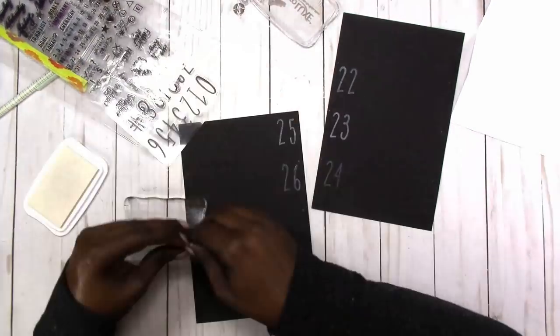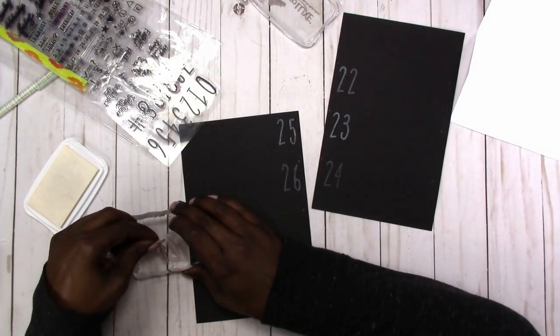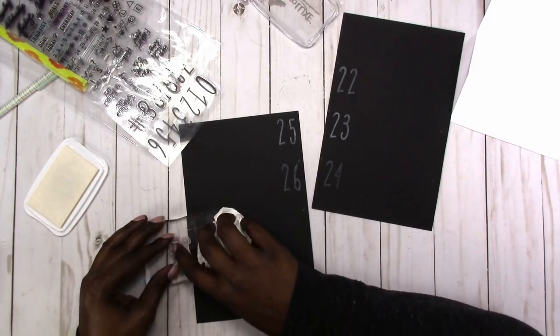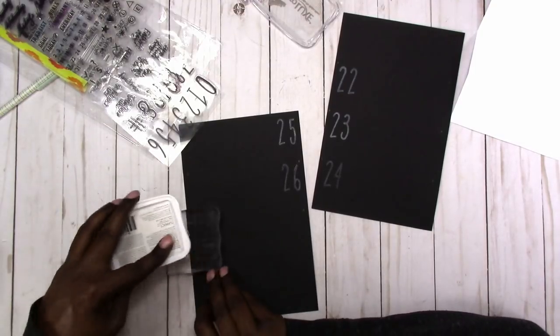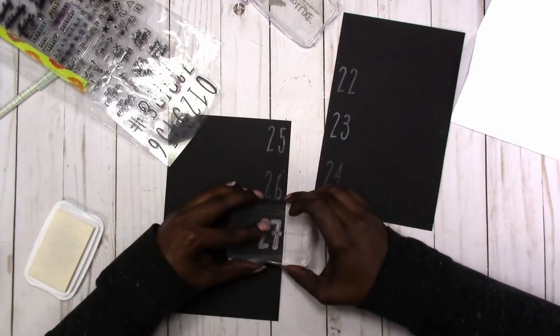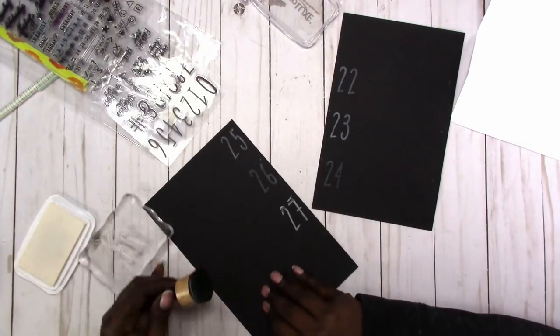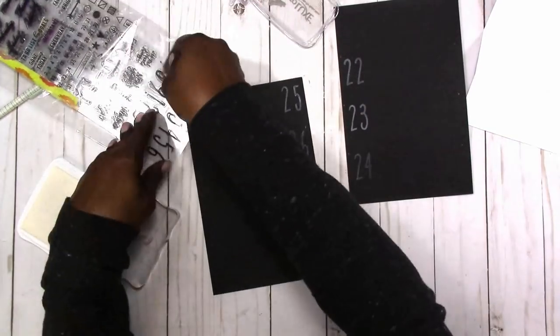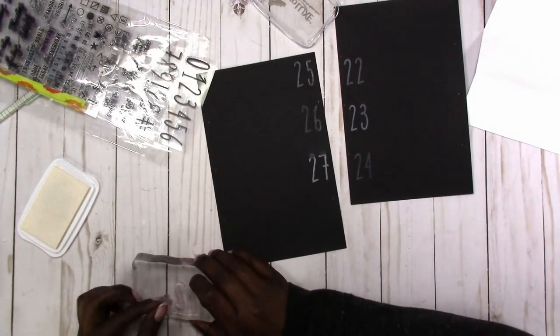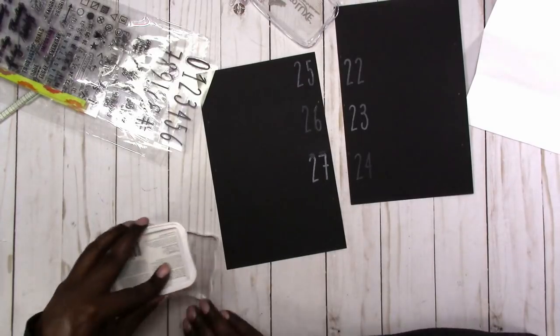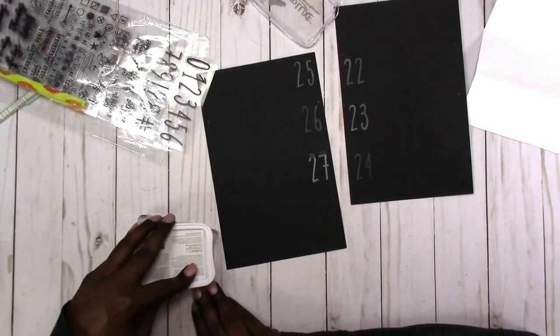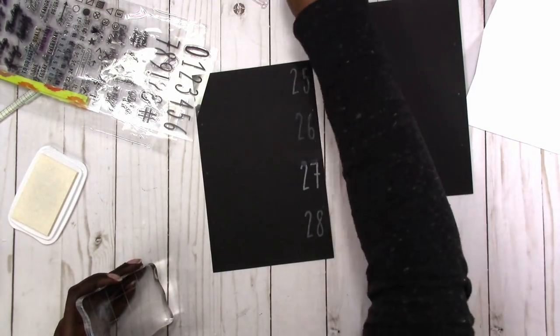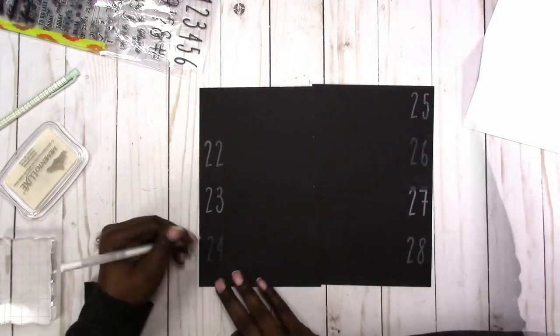Here I'm just cleaning my block because I got ink on the edges of the block. It can get a little messy. I also had a little extra ink over the top of those numbers and I just took some black ink and tried to correct that. I'll probably come back later and correct it a little more.